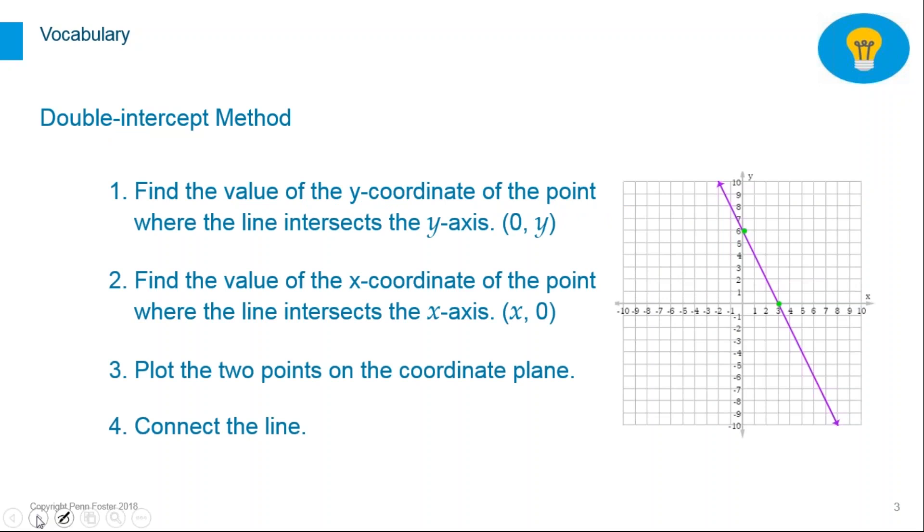Using the double intercept method, we need to follow these steps. One, find the y-intercept. Two, find the x-intercept. Three, plot these two points on the plane. And four, connect the line.